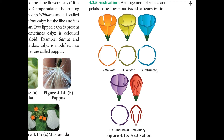The third type is imbricate aestivation, where petals and sepals irregularly overlap each other — one member is exterior, one is interior, and the remaining three have one margin in and one margin outside. It is classified into three types: ascending imbricate aestivation, quincuncial aestivation, and vexillary aestivation. In quincuncial aestivation, two petals are external, two petals are internal, and one petal has one margin internal and the other external. Example: calyx of Ipomoea, Catharanthus.